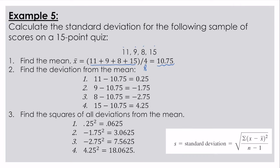I then find the deviations from the mean. So I take each data value minus the mean. So 11 minus 10.75 is 0.25, 9 minus 10.75 is negative 1.75, 8 minus 10.75 is negative 2.75, and 15 minus 10.75 is 4.25.